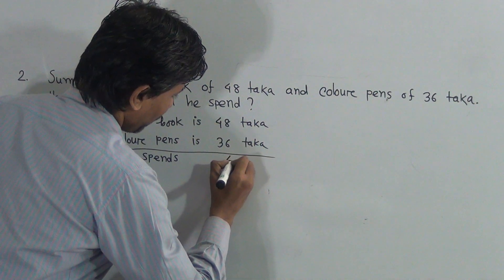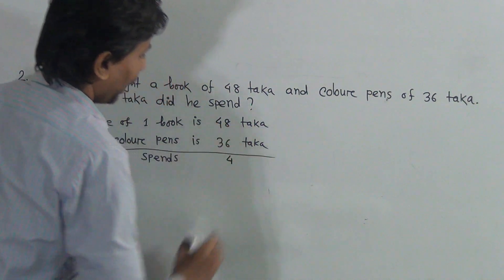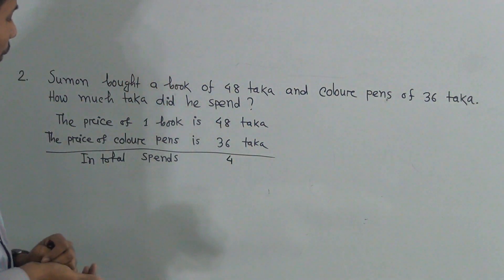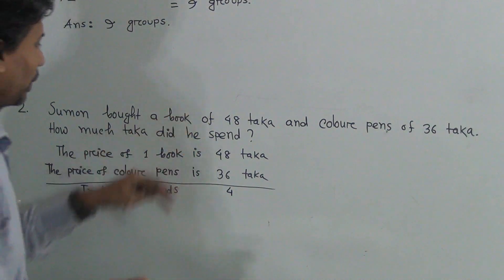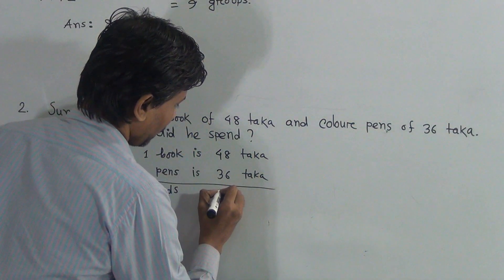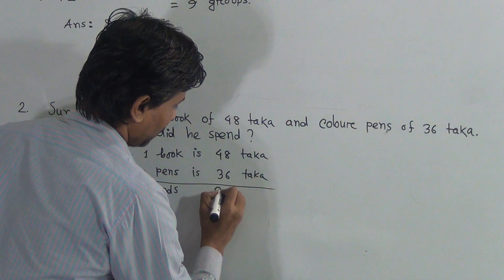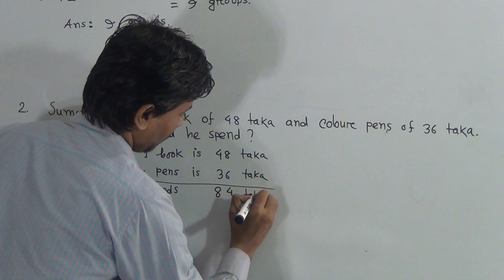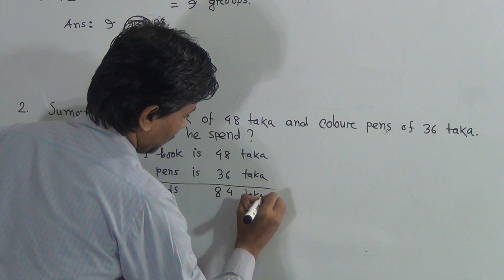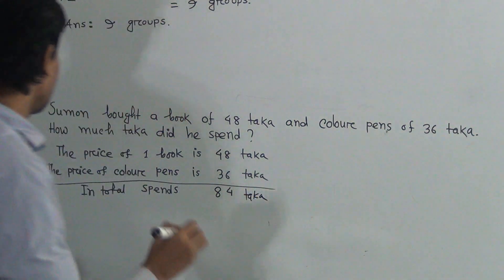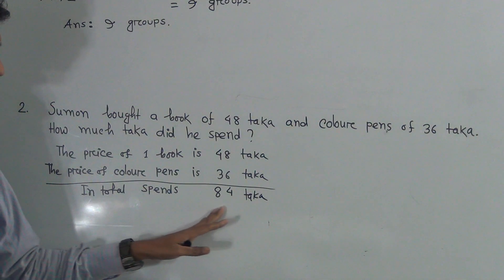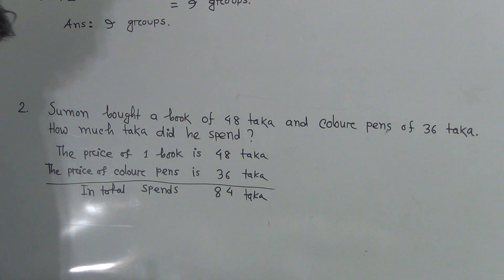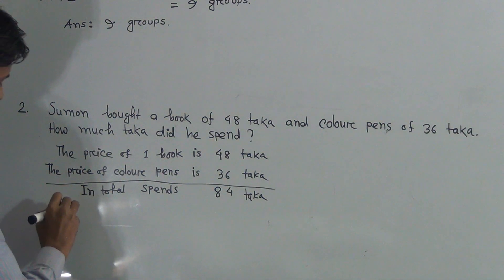8 plus 6 is 14 — write 4 and carry 1. Then 1 plus 3 is 4, and 4 plus 4 is 8. That means the total expense is 84 taka.